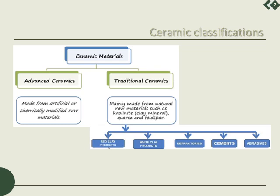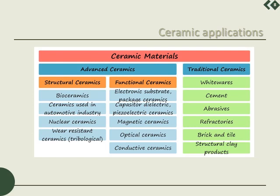Ceramics can be classified into traditional ceramics and advanced ceramics. Traditional ceramics are mainly made from natural raw materials like kaolinite, clay mineral, quartz, and feldspar. Advanced ceramics are made from artificial or chemically modified raw materials. Traditional ceramics are used in whitewares, cement, abrasives, refractories, bricks, and structural applications. Advanced ceramics serve as structural ceramics — including nuclear ceramics, automotive brake pads, wear resistant ceramics, and tribological industries — and as functional ceramics, including electronic substrates, capacitors, piezoelectrics, and magnetic ceramics.